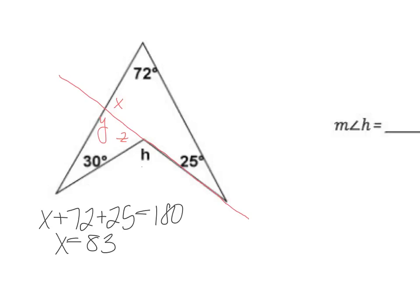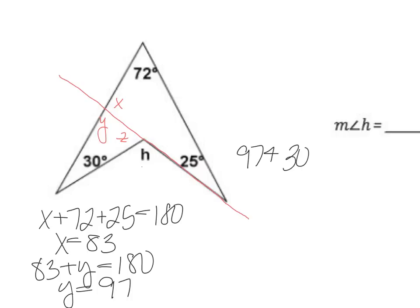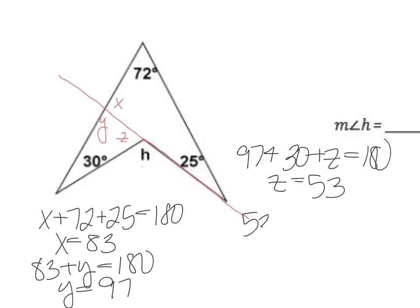180 minus 83 gives y equals 97. Then using the sum of interior angles to find z: 97 plus 30 plus z equals 180, so z equals 53. Then a linear pair with h: 53 plus h equals 180, giving h equals 127 degrees.